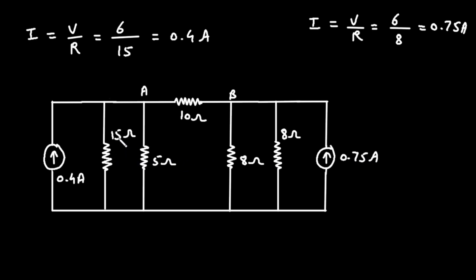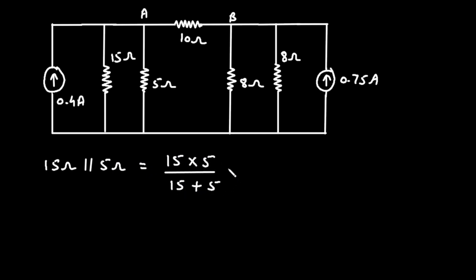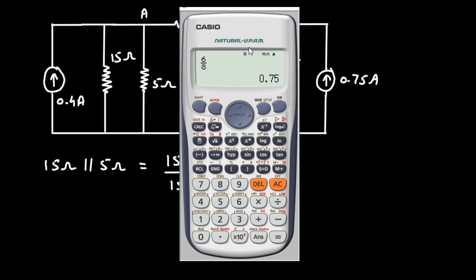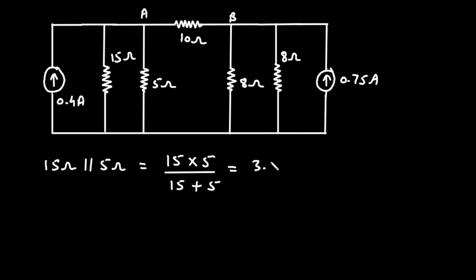Now we can see that the 15 ohm and 5 ohm are connected in parallel. 15 ohm parallel with 5 ohm equals 15 into 5 divided by 15 plus 5, which equals 3.75 ohm.